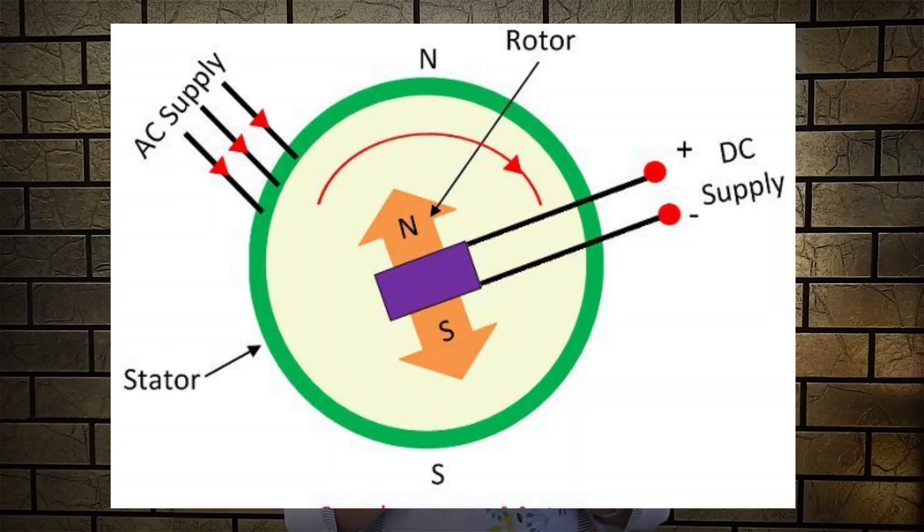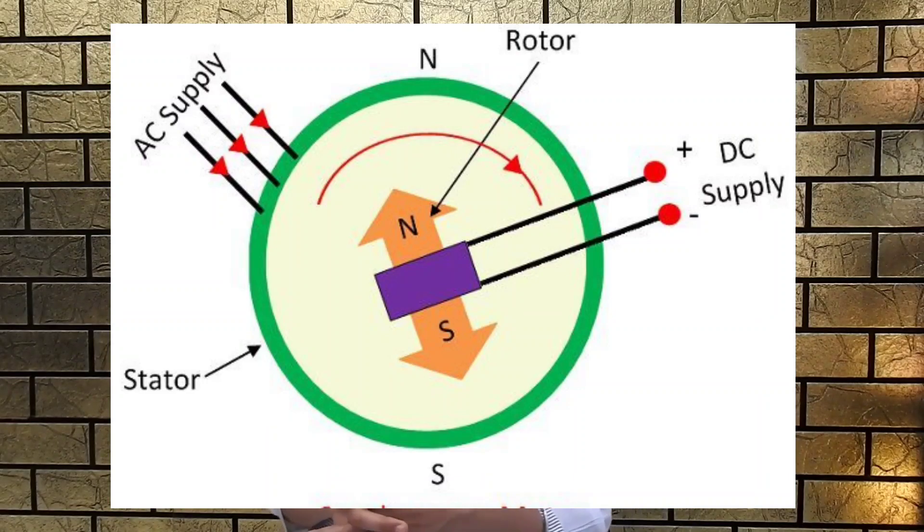The synchronous motor works with two electrical inputs. The stator is equipped with a three-phase AC supply while the rotor is provided with DC supply. The stator winding generates a three-phase rotating magnetic flux and the rotor carrying DC supply produces a constant flux. At a particular instant the rotor and stator poles might be of the same polarity — north to north and south to south — causing a repulsive force, and at the next instant it will be north-south causing an attractive force. Due to this alternating attractive and repulsive force, the motor cannot rotate and remains in a standstill position.